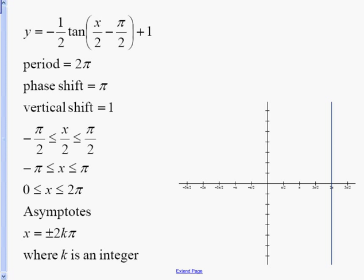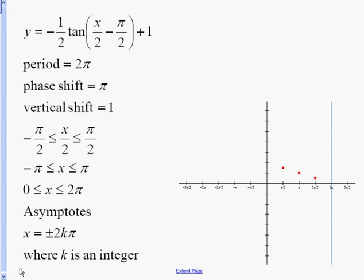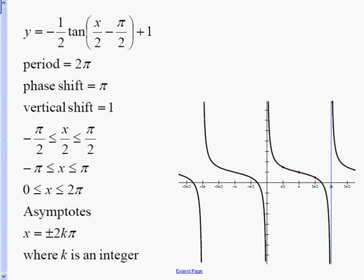As I mentioned, this problem has a negative coefficient. We're still going to cross in the middle, and remember we have a vertical shift so we're crossing up 1. Since it's negative, on the right hand side we go down one half — one half because that's our amplitude, down because it's negative. On the left hand side we go up one half. I'll connect these points, and there's my tangent curve.